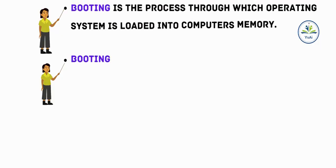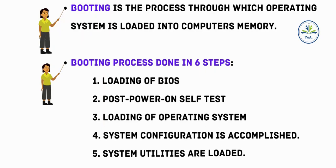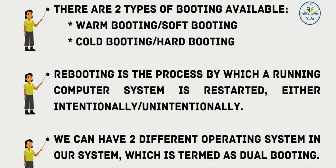Let's conclude today's session. Booting is the process through which the operating system is loaded into computer's memory. The booting process is done in six steps: loading of BIOS, POST power on self test, loading of operating system, system configuration accomplished, system utilities loaded, and user authentication. There are two types of booting: warm booting or soft booting, and cold booting or hard booting. Rebooting is the process by which a running computer system is restarted either intentionally or unintentionally. Having two different operating systems on a system is termed dual booting. I hope you completely understand the booting process. If you have any doubts, feel free to write in the comment box. Thank you so much, we'll see you in our next video.